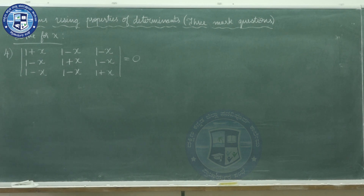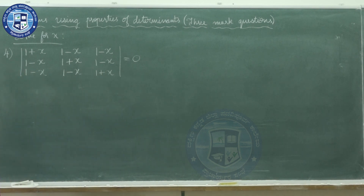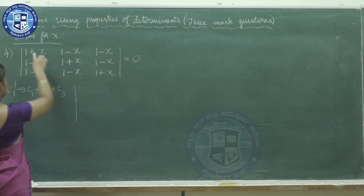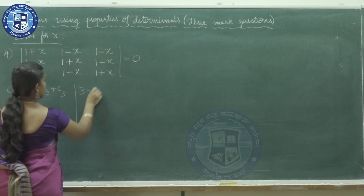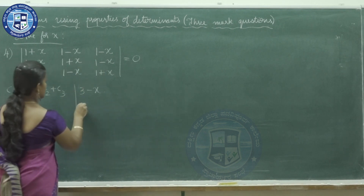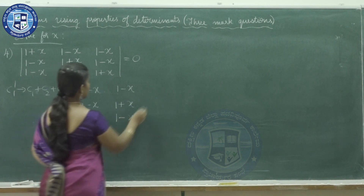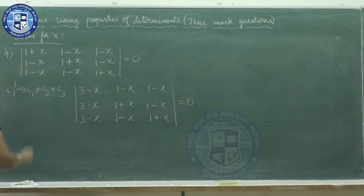Fourth question: the determinant is 1+x, 1−x, 1−x; 1−x, 1+x, 1−x; 1−x, 1−x, 1+x equals 0. Observing that every row has similar numbers, we go for the column operation: column 1 replaced with column 1 plus column 2 plus column 3. Adding: 1+1+1=3, and the x terms partially cancel, giving 3−x. So the first column becomes 3−x throughout. Take out 3−x, equals 0.